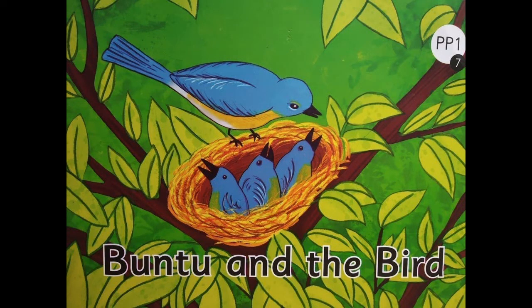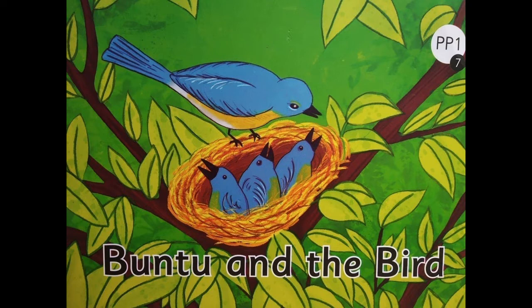Children, are you ready for the activity? Let's begin. The name of the story is Bantu and the Bird. Turn to the first page, look at the picture, and see what's happening. The first question is: what is everyone doing in this picture? Look at the picture and tell the answer to mama or papa.